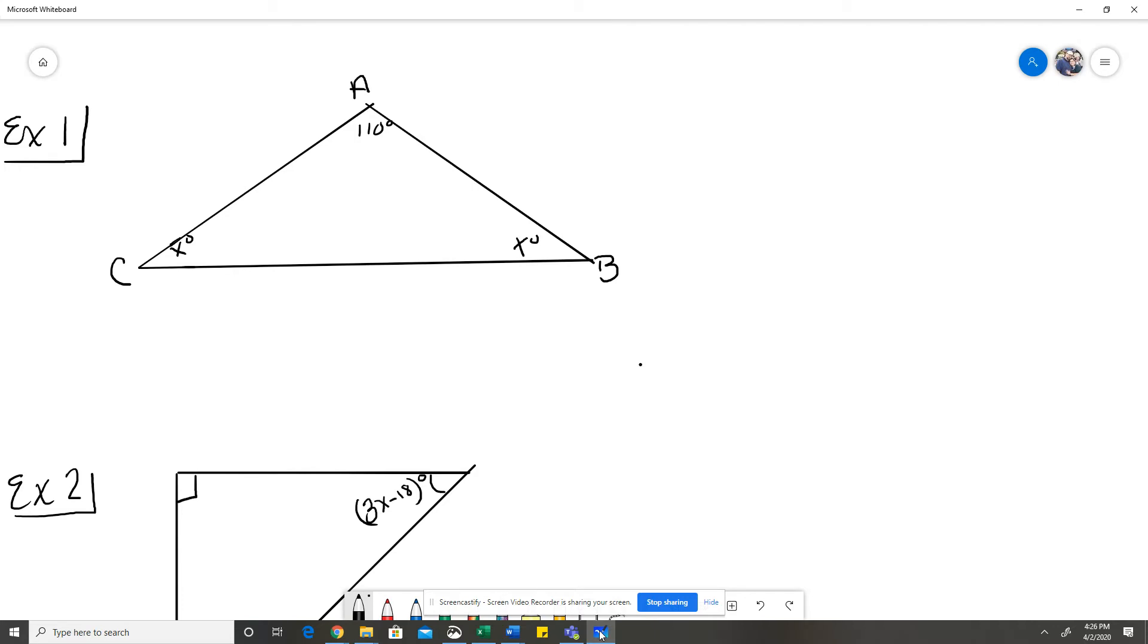If I were to add up my three angles, I have 110 plus X plus X is going to equal 180. This is angle A, angle B, and angle C. I'm going to put these two together. So I have 110 plus 2X equals 180.